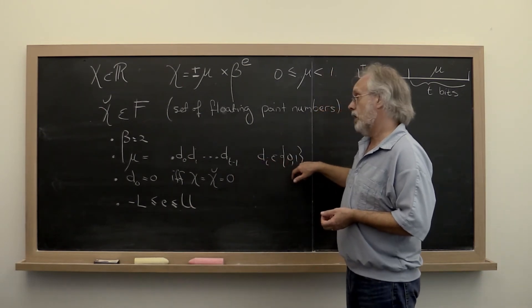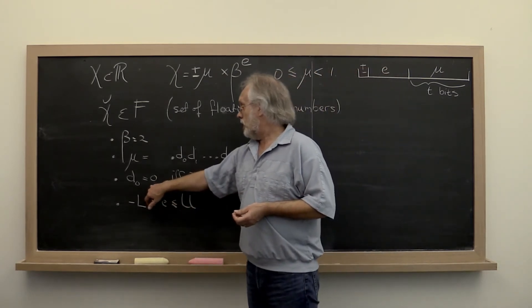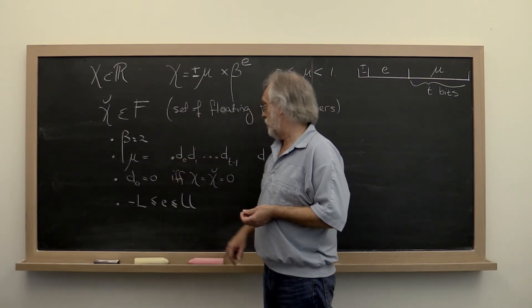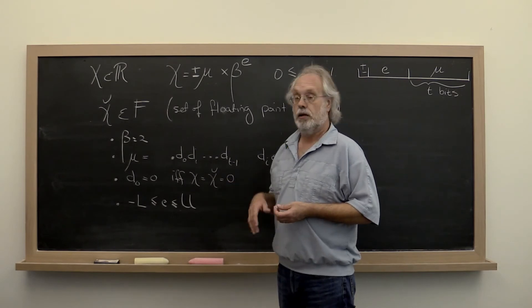Those digits can be 0 or 1, so they're bits. And we normalize it so that the first binary digit is equal to 0 if and only if the real number that we're trying to store is 0.